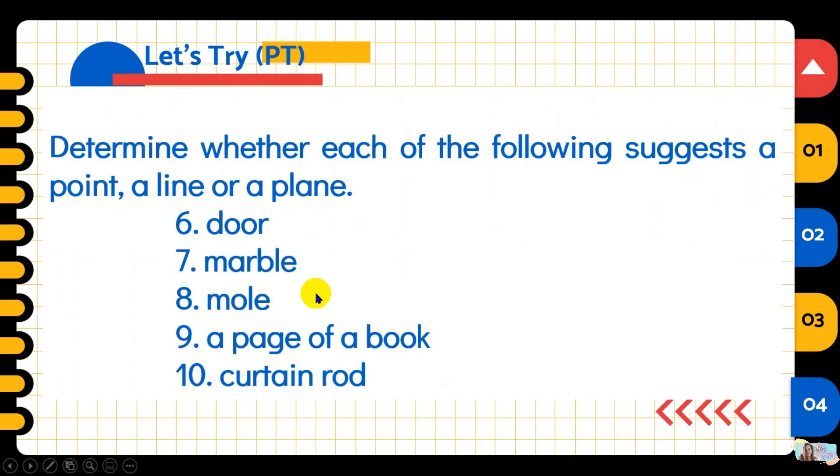Another items, item 6 to 10. Again, you can pause this video for a while. Write your answer on your notebook. And after you finish, you can play the video again for the answers. So, door. This is a plane. How about the marble? This is a point. Mole. What is a mole? Those marks on our skin, right? So it is a pictorial representation of a point. A page of a book. One page of a book. So this is a plane. Then the last item, curtain rod. Where we hang our curtains. That is a representation of a line.